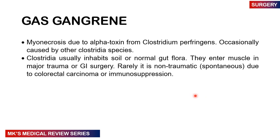For dry gangrene, we sometimes cover patients with antibiotics to prevent superadded infection. If there is an infection, we do cover them on antibiotics. Once the line of demarcation has formed, you can plan surgery and proceed with amputation. I did a video on amputation which I'll leave tagged at the end of this video.